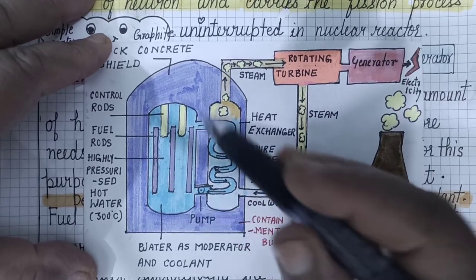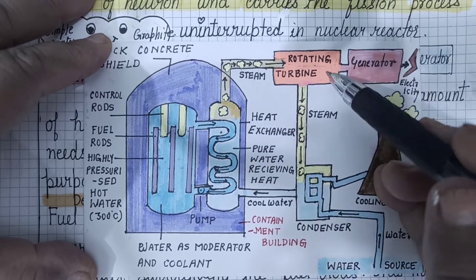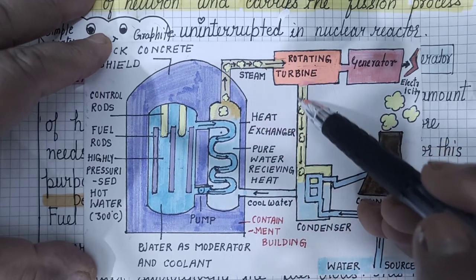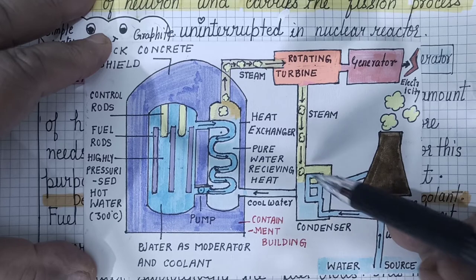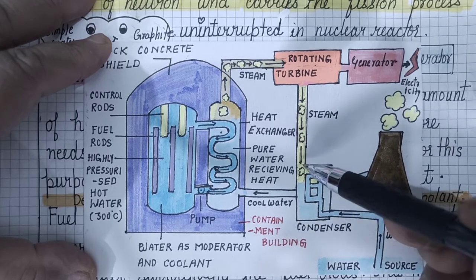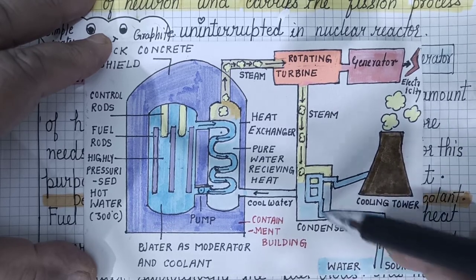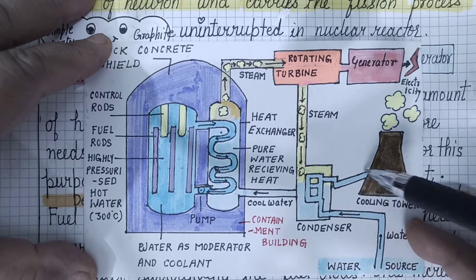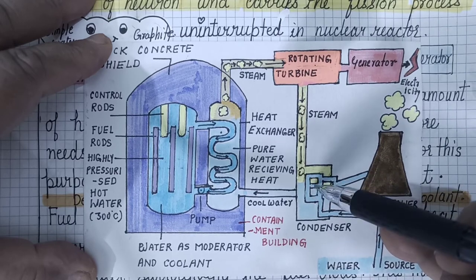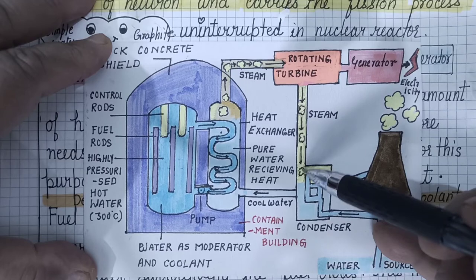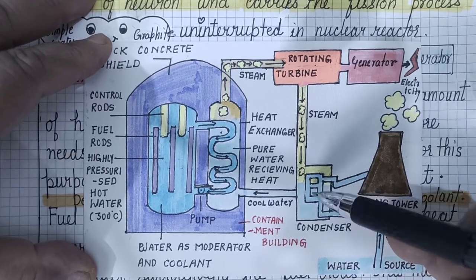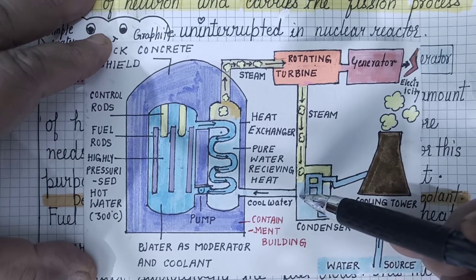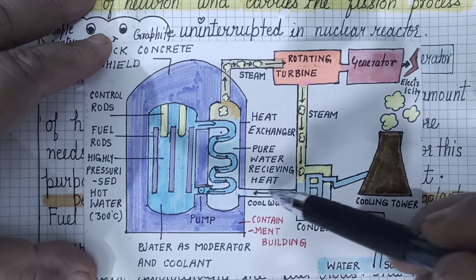This is a simple explanation of a nuclear power plant. The steam passes through a tube in a chamber called the condenser, where cold water from water resources is also circulated. The steam is cooled in the condenser and condenses back into water.